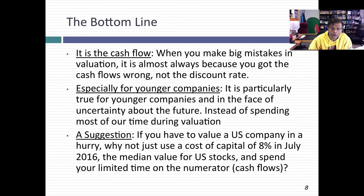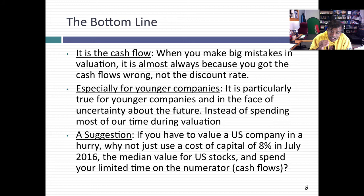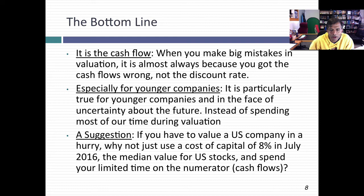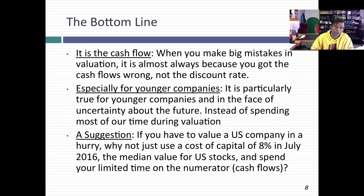In contrast, if you look at profit margins and revenue growth rates, the distributions are much wider. Your potential to be wrong is far greater on the cash flows than on the discount rate. If you're thinking about where to spend time in a valuation, you're far better off getting the cash flows nailed down. That is especially true for younger companies. For a U.S. company with all operations in the U.S., I would suggest spending all the time you have estimating cash flows and using an 8% cost of capital — the median — and you'll be pretty close to the actual value.